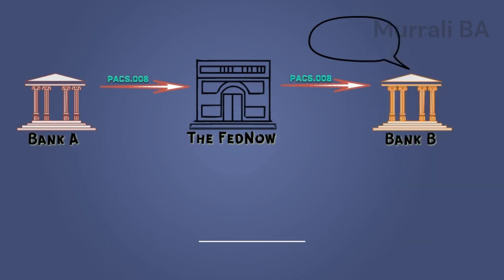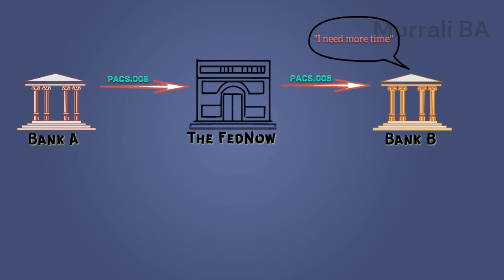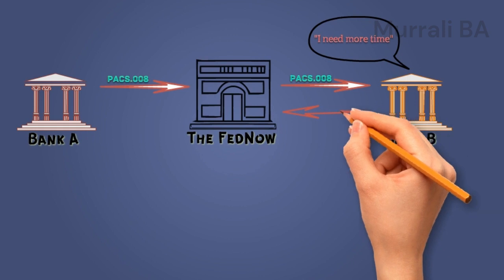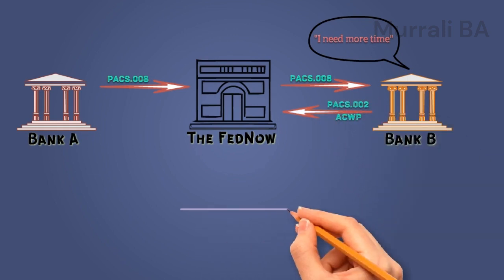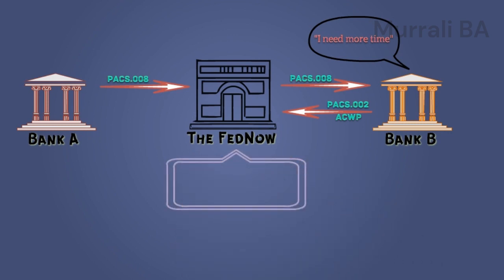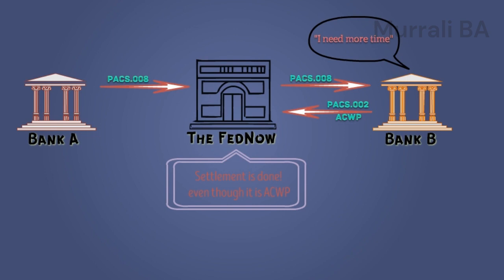To avoid this dilemma, if Bank B feels they would like to take more time to process the payment request — under suspicion that it could be a fraudulent payment or for any other reasons — they can send PACS 002 ACWP. When FedNow receives this response, it recognizes the process could take some time or even a couple of days in the worst case. So FedNow would immediately proceed with the settlement, because ACWP means the request is accepted but the amount is not yet credited to the beneficiary account.